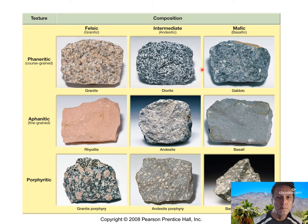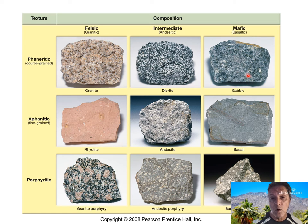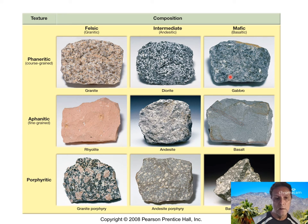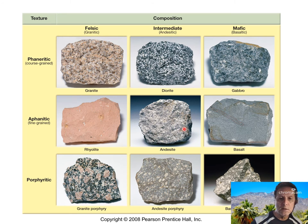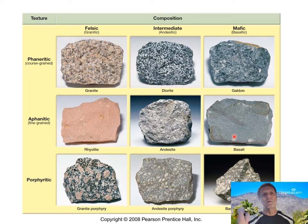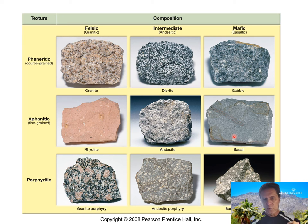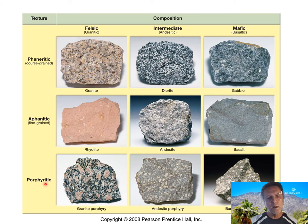Mafic gabbro rock is also coarse-grained. So granite, diorite, and gabbro are all intrusive — coarse-grained — they cool below the surface of the Earth. 'Aphanitic' means fine-grained. These are the lavas: rhyolite, andesite, basalt. Lavas reach the Earth's surface and cool quickly under atmospheric conditions, so crystals don't get a chance to develop due to the rapid cooling.